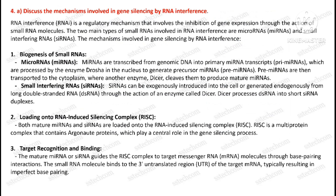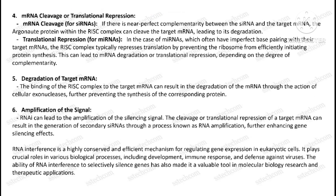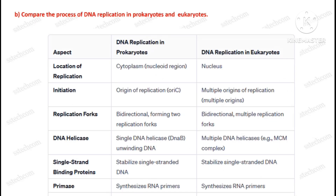Question number four, part A: discuss the mechanisms involved in gene silencing by RNA interference. The second part of this question is: compare the process of DNA replication in prokaryotes and eukaryotes.